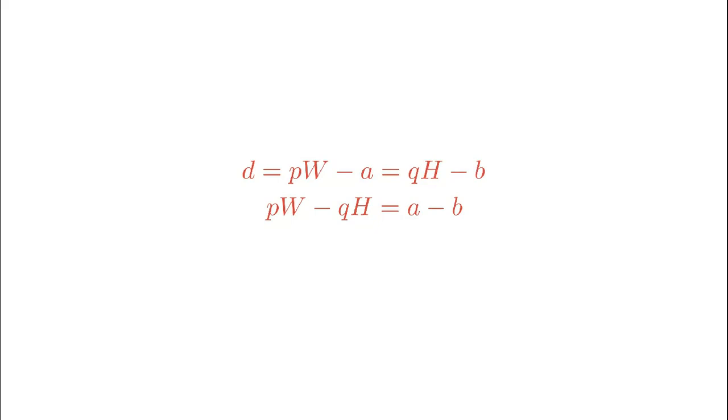Now if you don't know what a diophantine equation is, I will leave a link in the description. Also, I can probably make a video on diophantine equation. Anyway, like the previous case, this time we might not get a solution always. In fact, in order for this to have a solution, the gcd of capital W and capital H must divide A minus B. And indeed, that is our condition. In order to reach a corner, A minus B must be divisible by the gcd of capital W and capital H.